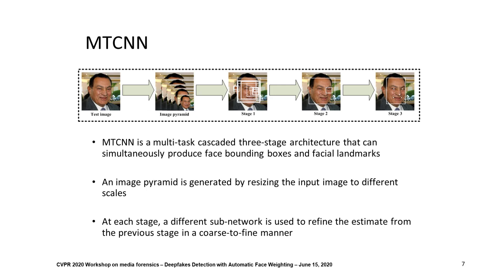MTCNN is a multi-task, cascaded, three-stage architecture that can produce both face bounding boxes and facial landmarks. This system generates an image pyramid by resizing the input image to different scales. Then, this image pyramid is processed through three different stages. At each stage, a different subnetwork is used to refine the estimate from the previous stage.